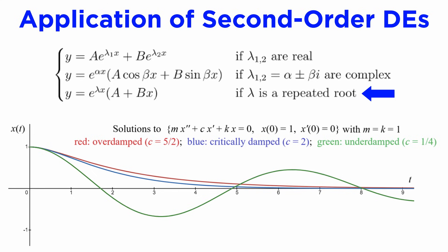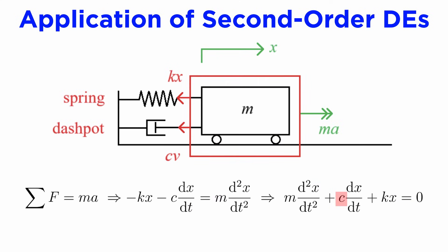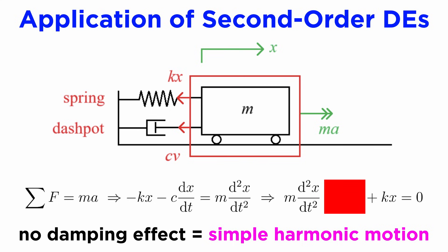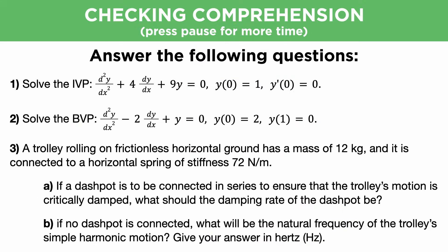In the third case, of a repeated root, we say that the motion is critically damped, which gives us no oscillations, and brings the trolley to rest in the shortest possible time. Notice that if c equals zero, we will just have a mass on a spring, with no damping effect at all, and the oscillations will go on forever, which is called simple harmonic motion. Let's check comprehension.